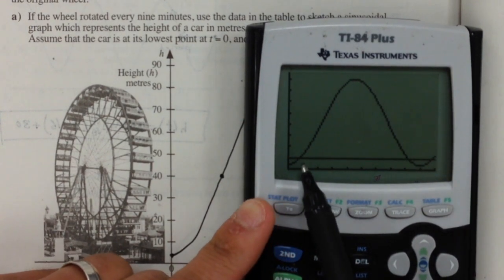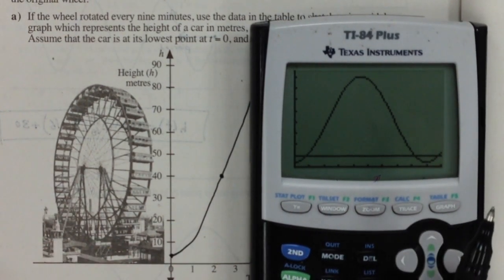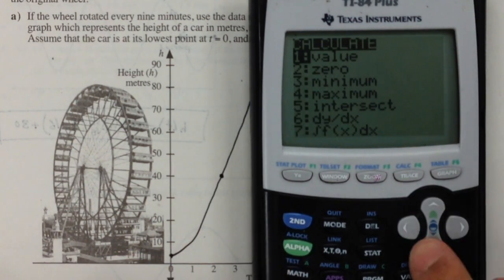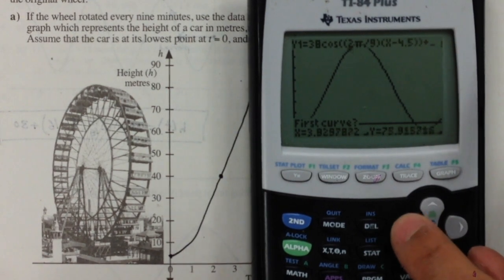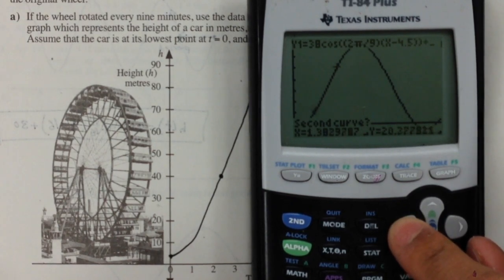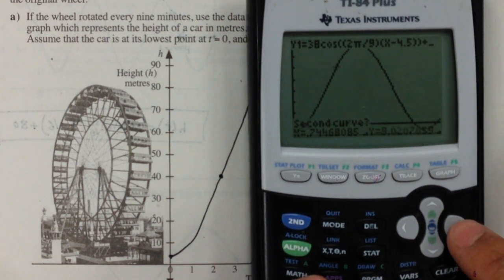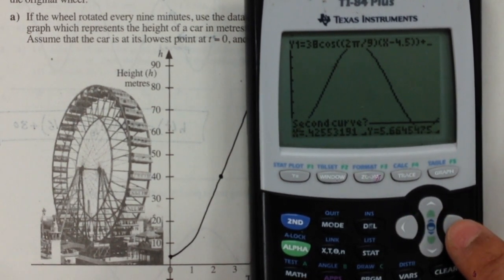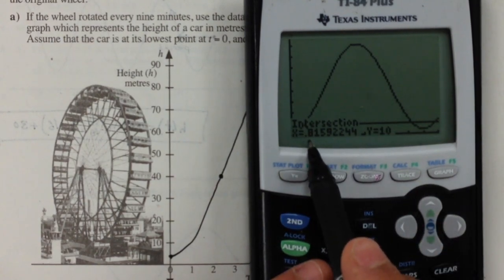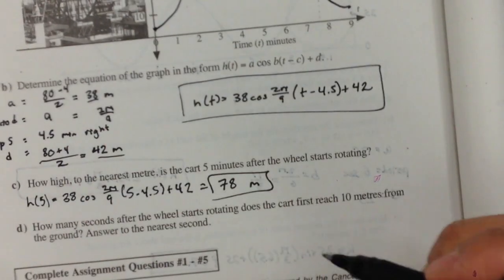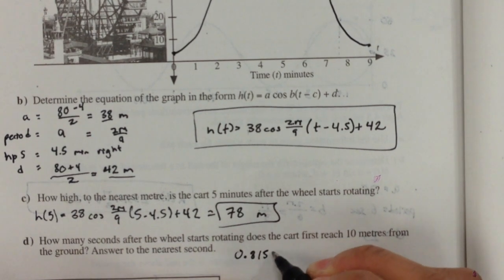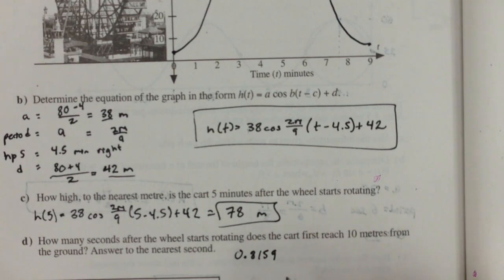We're looking for the intersection at 10. We're looking for the first intersection point to the nearest second when it first reaches 10 meters. Second function trace, let's look for that intersects. My first curve is over here, the second curve is down here. So our intersection point is at 0.8159, and that is 0.8159 of an hour.